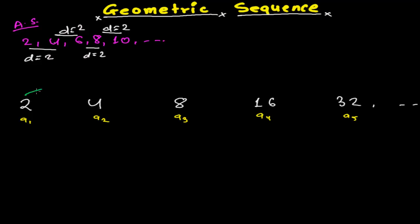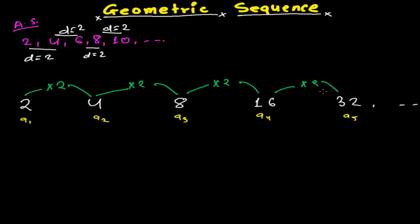What I notice here is that if I multiply the first term by 2, I get the second term. Multiplying the second term by 2 gives the third term. Multiplying the third term by 2 gives the fourth term, and multiplying the fourth term by 2 gives the fifth term. So everywhere I'm multiplying by the fixed constant 2 to get the succeeding term — for example, 8 times 2 gives 16.